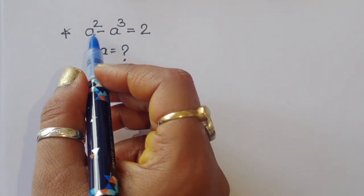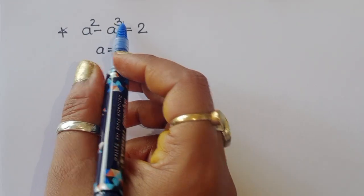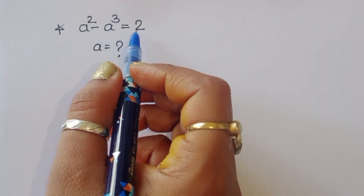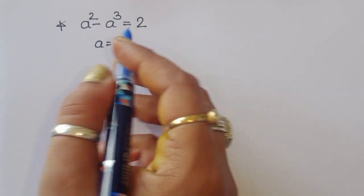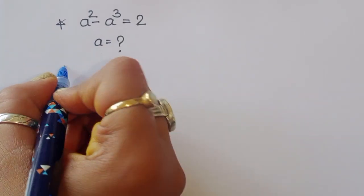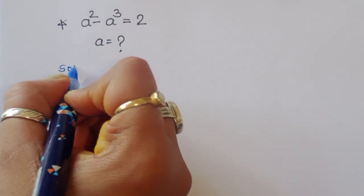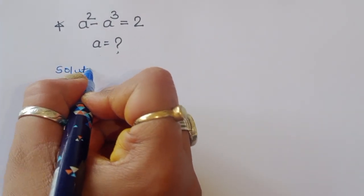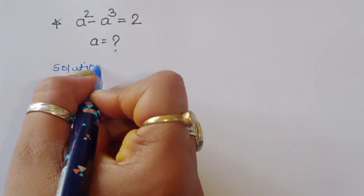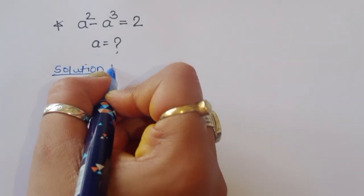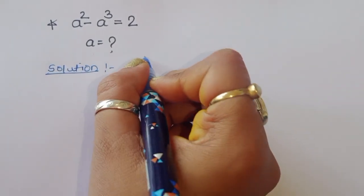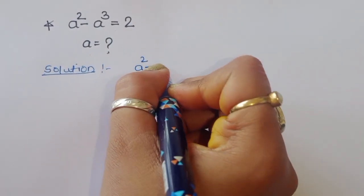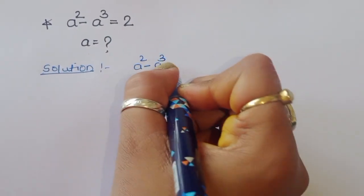The question is: given a squared minus a cubed is equal to 2, we have to find out the value of a. Let's see the solution — how we can find out the value of a in this equation.